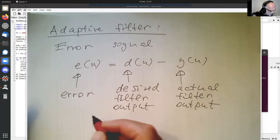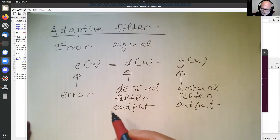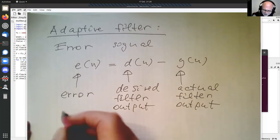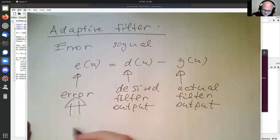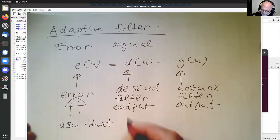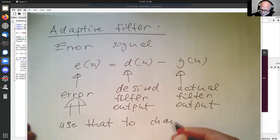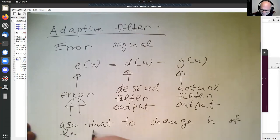And so what we're doing with the error signal here is we tune the FIR filter and change the coefficients. So use that to change H of the FIR filter.